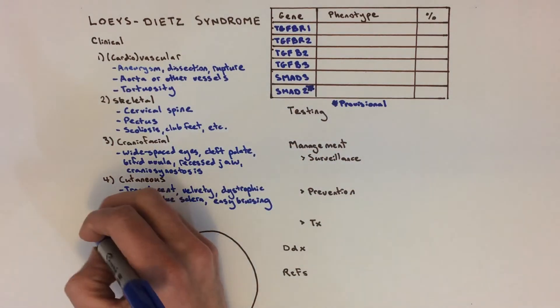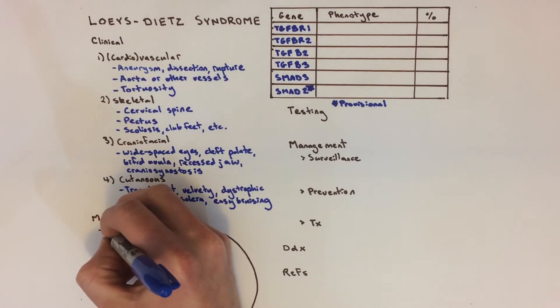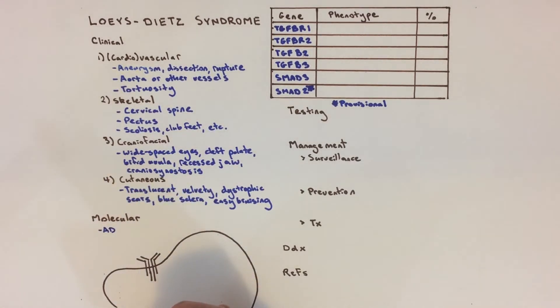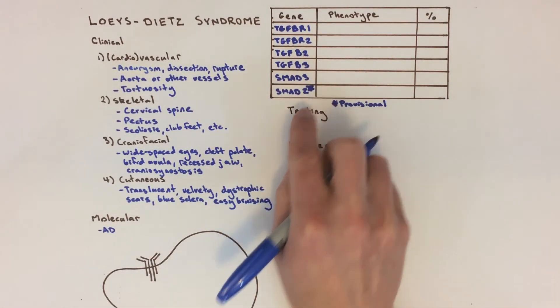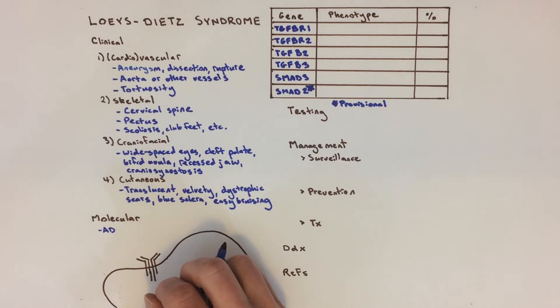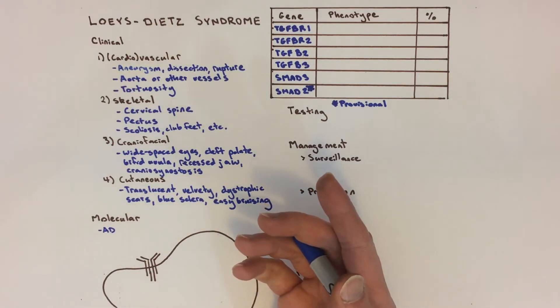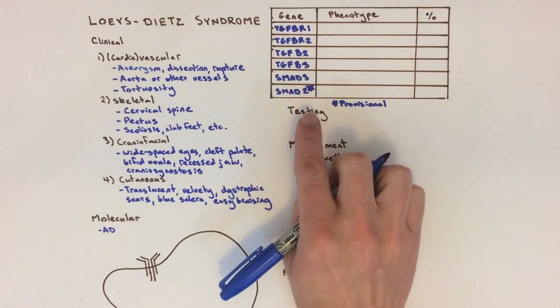Loeys-Dietz syndrome is a highly penetrant autosomal dominant disorder. About 75% of cases are sporadic, and the other 25% are inherited. There are five known genes plus one provisional gene. The phenotype is variable enough that there aren't minimum clinical diagnostic criteria. Thus, testing for a causative mutation is important to confirm the diagnosis.